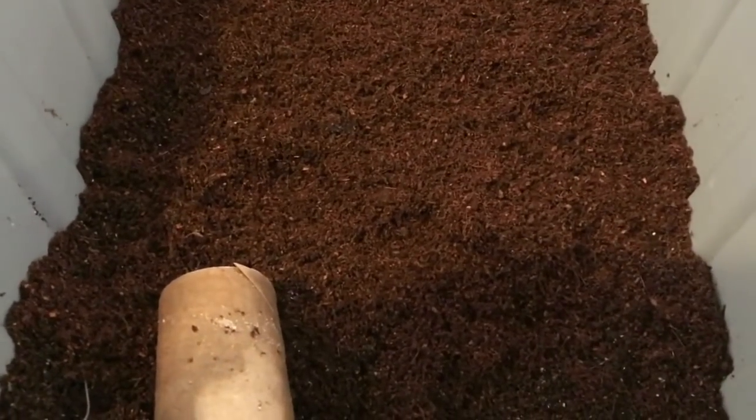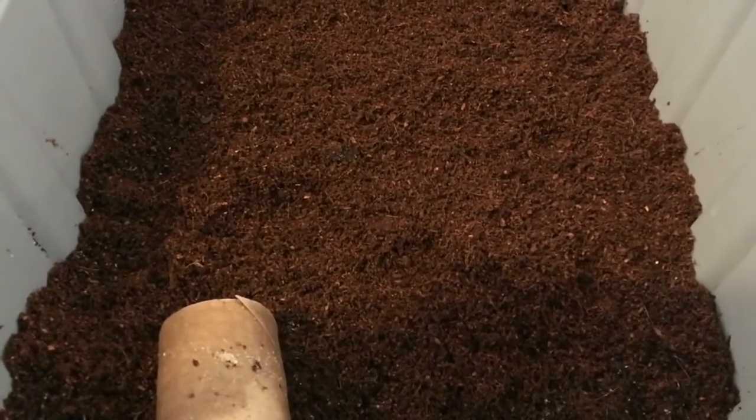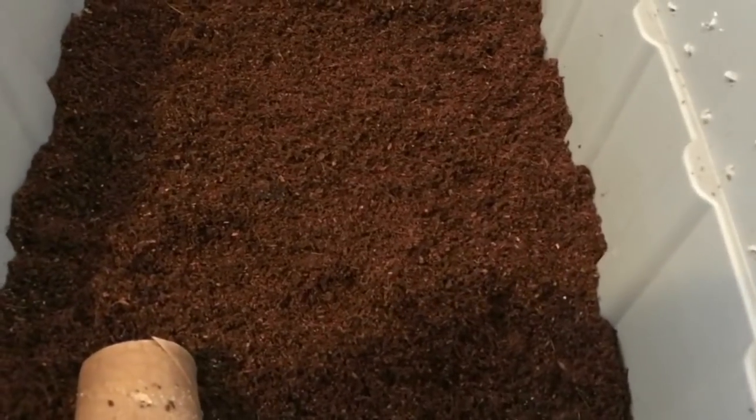Alright guys, so I added three cups of coconut coir to each of these bins. A cup was an easy measuring source for me, so that's what I did.